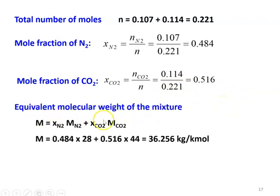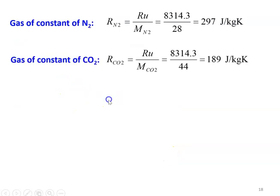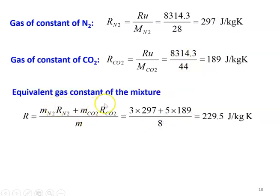Equivalent molecular weight of the mixture: M equals XN2 × MN2 plus XCO2 × MCO2 — 0.484 into 28 plus 0.516 into 44 equals 36.25 kg per kg-mole. Gas constant for N2: RN2 equals 8314.3 divided by 28 equals 297 joules per kg Kelvin. Gas constant for CO2: RCO2 equals 8314.3 divided by 44 equals 189 joules per kg Kelvin. Equivalent gas constant for the mixture: R equals (MN2 × RN2 + MCO2 × RCO2) divided by total mass — 3 into 297 plus 5 into 189, divided by 8, equals 229.5 joules per kg Kelvin.